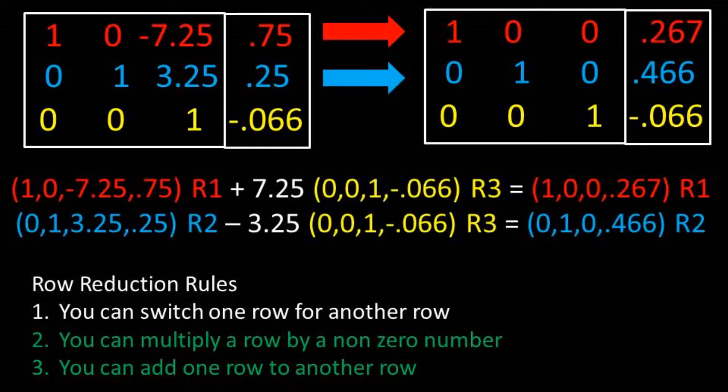Next, let's work on getting zeros above the pivot in row 3, column 3. We can take row 1 plus 7.25 times row 3 to get a 0 in row 1.